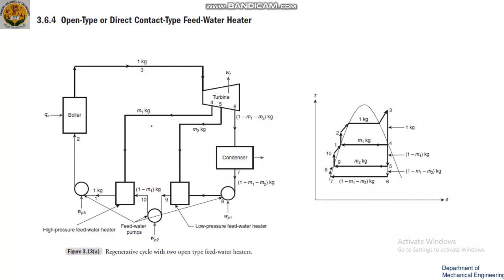Hello all, in this video we will see the open type or direct contact type feed water heater. As already mentioned, there are two types: one is open and one is closed type. In open type, they will directly mix the steam with the condensed water.